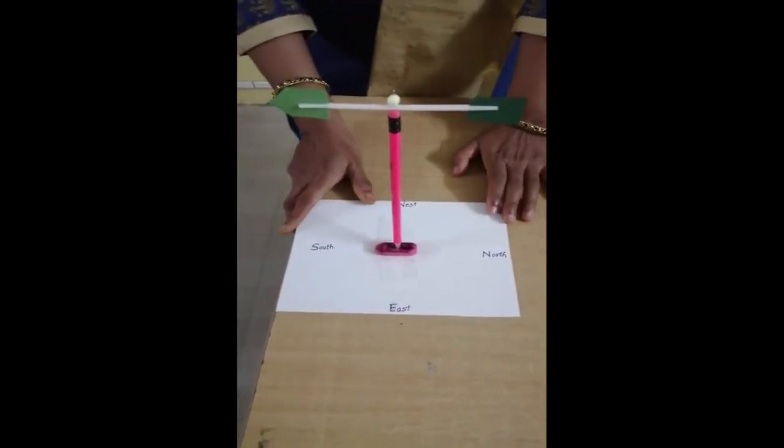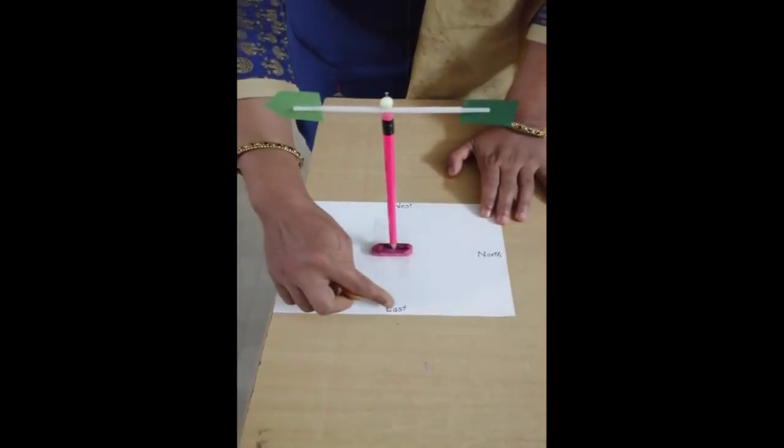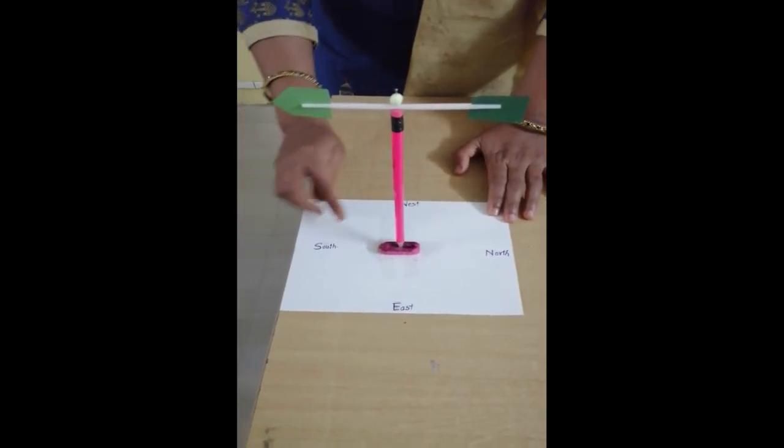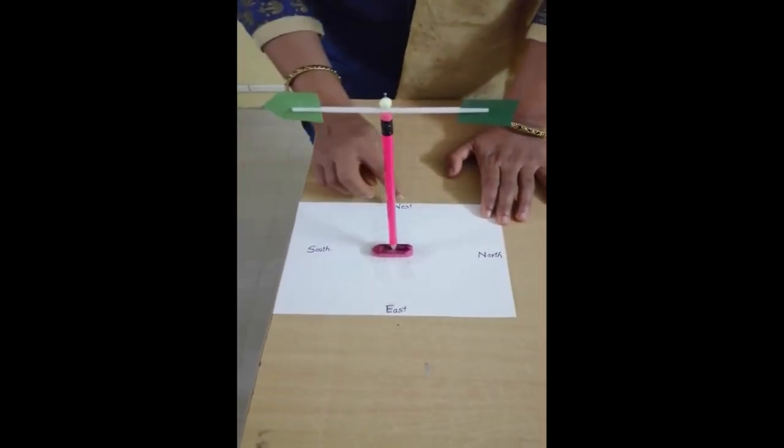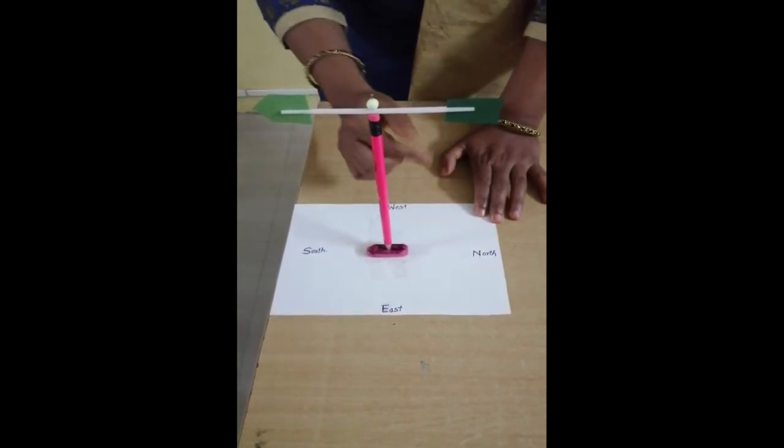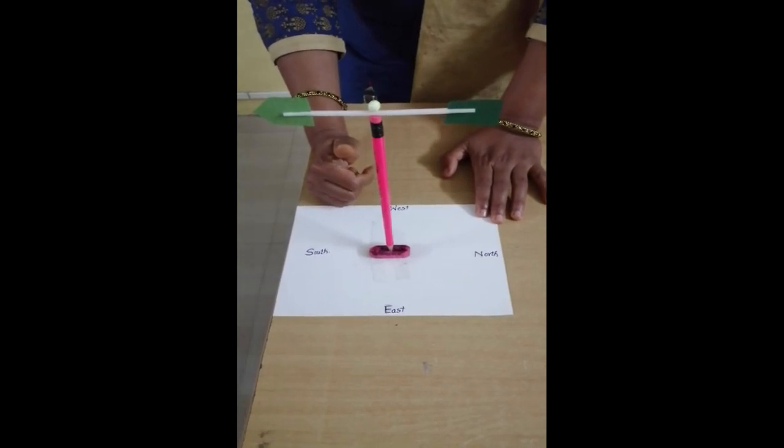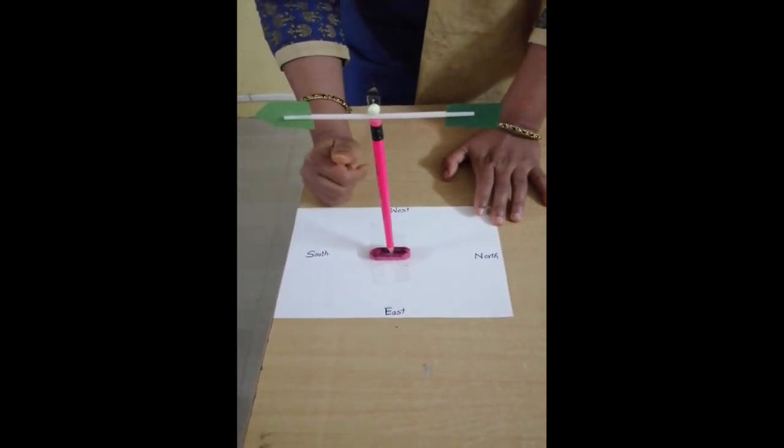So this is our instrument which we have prepared in this activity. You can see, children, I have written the names of directions: east, south, west, and north. You have to write in the same way. Now it is showing the direction of the wind. You can see that it shows the speed of wind also.